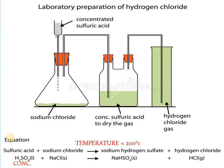Now let us discuss the lab preparation of hydrogen chloride gas. We take sodium chloride as the reactant and slowly add concentrated sulfuric acid drop by drop. Heating is required at a temperature less than 200°C. You get sodium hydrogen sulfate (an acid salt) along with HCl gas, which is heavier than air. The method of collection is upward displacement of air.